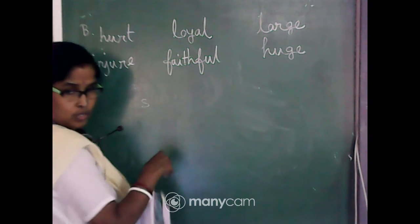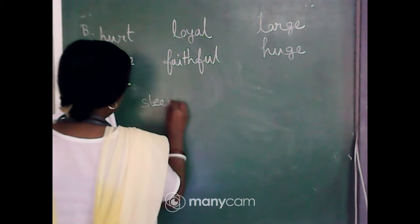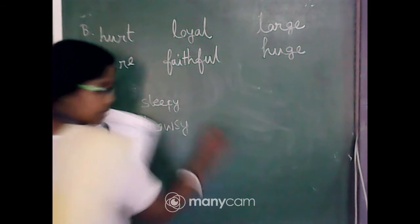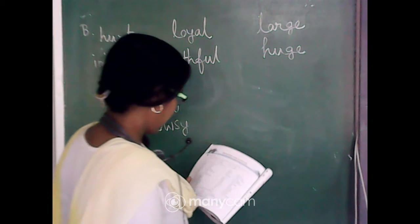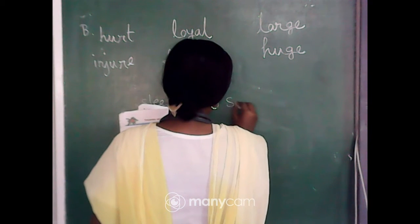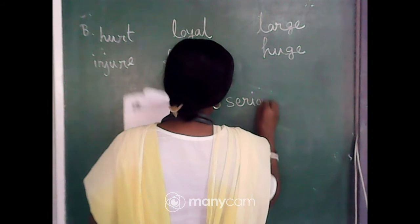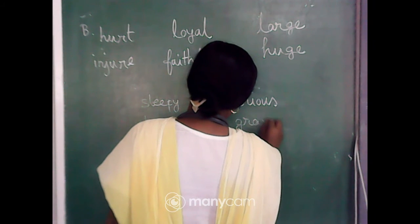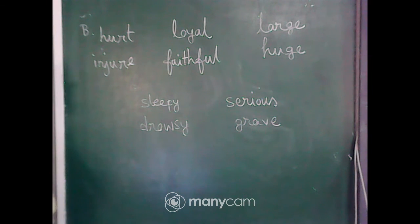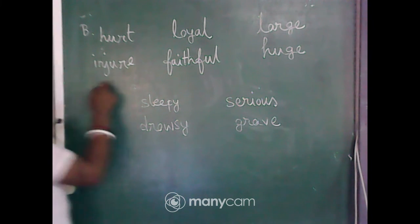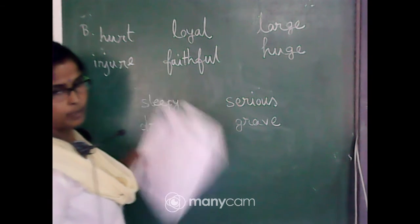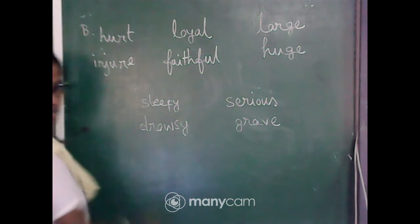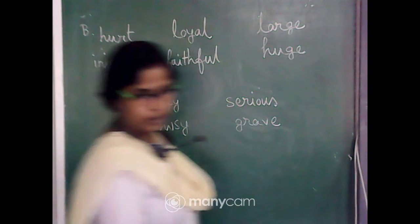Sleepy — drowsy. Then serious — S-E-R-I-O-U-S — grave — G-R-A-V-E. Done. So I repeat: heart/endure, loyal/faithful, large/huge, sleepy/drowsy, serious/grave.